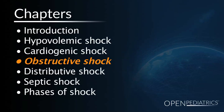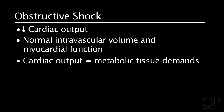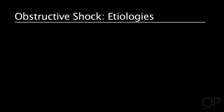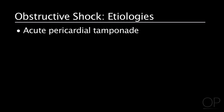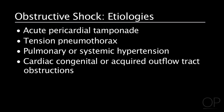Obstructive shock is the inability to produce adequate cardiac output despite normal intravascular volume and myocardial function. The key differentiators are that there is a normal intravascular volume and the heart is functioning properly, yet cardiac output is unable to meet the metabolic demands of the tissue. Etiologies include acute pericardial tamponade, tension pneumothorax, pulmonary or systemic hypertension, cardiac congenital or acquired outflow tract obstructions, and pulmonary embolism.